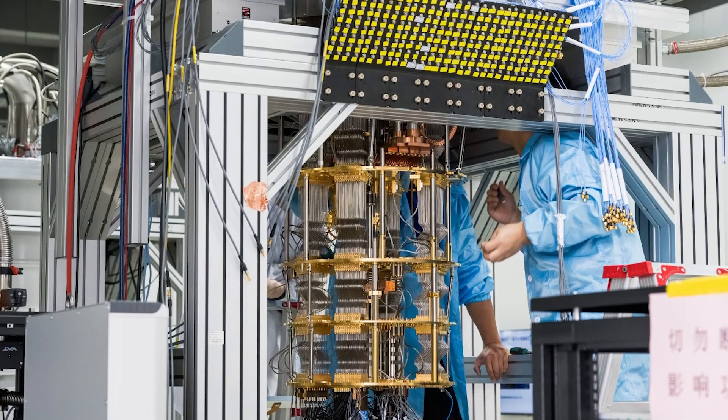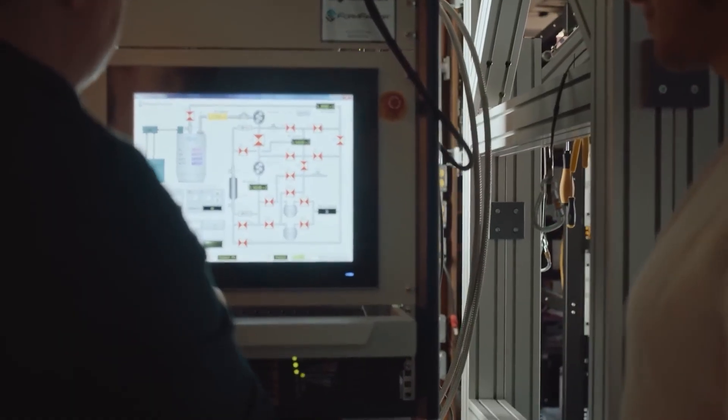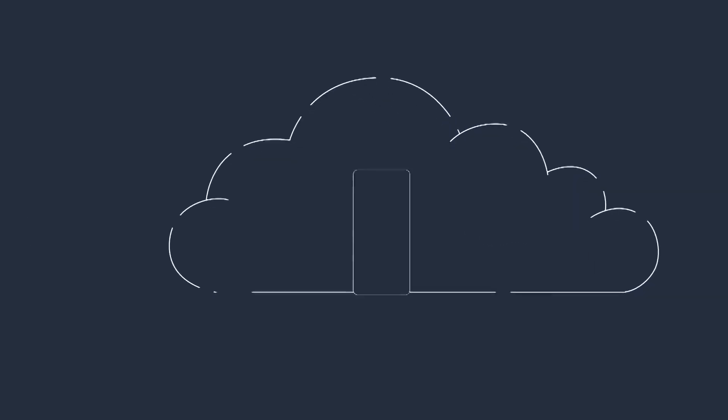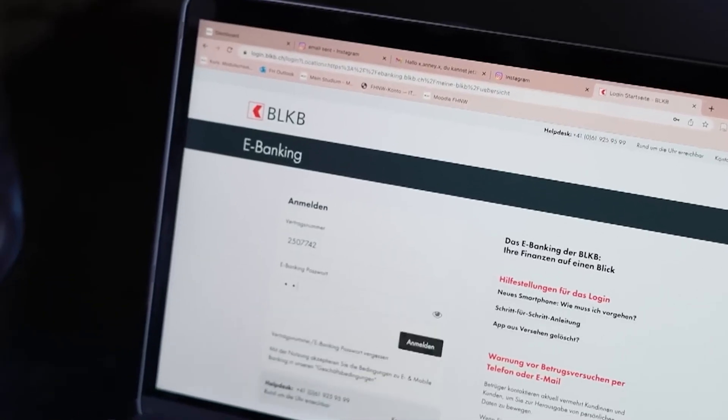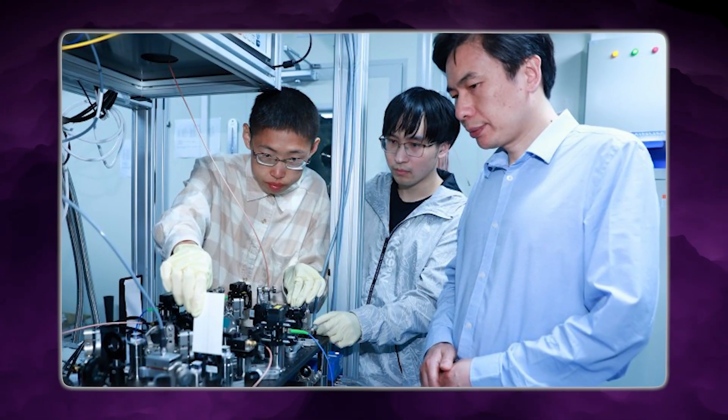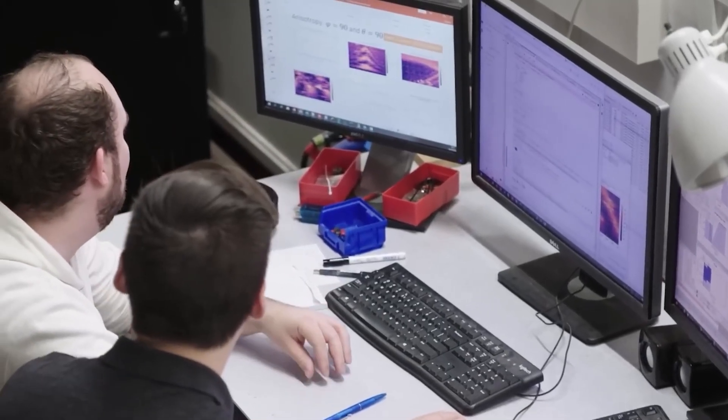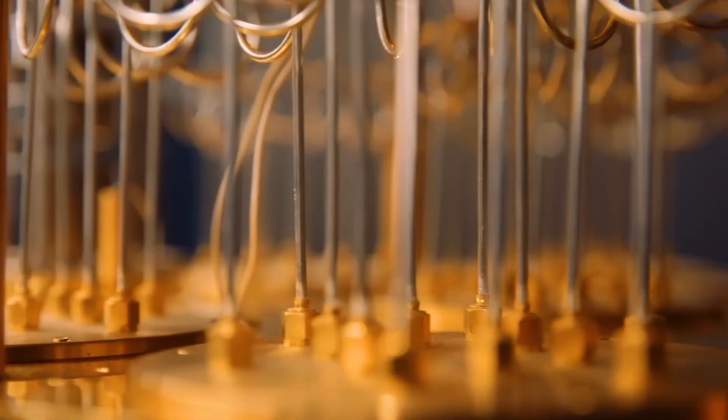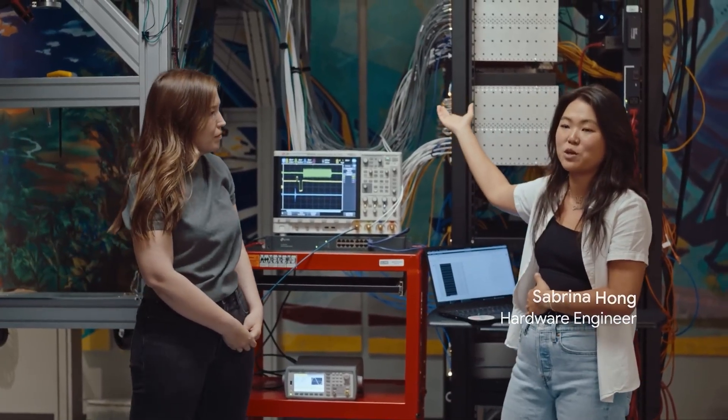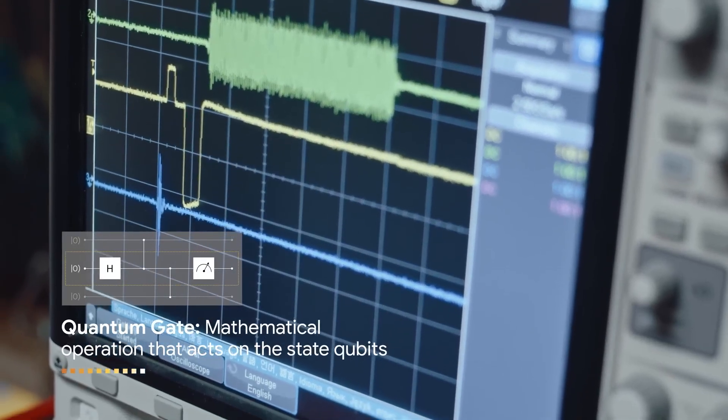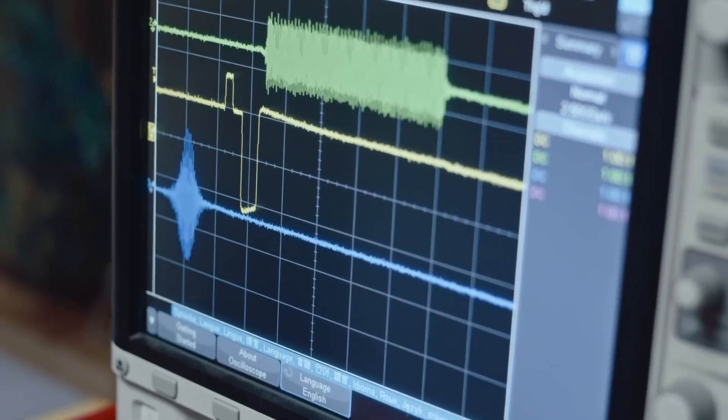Another reason Hanyuan-1 crossed the commercialization threshold is the ecosystem built around it. Quantum computing has long suffered from a usability problem. Many systems require deep knowledge of quantum physics to operate effectively. Cloud platforms help, but they also introduce data security concerns and limit integration with existing workflows, especially for industries handling sensitive information. Recognizing this, the teams behind Hanyuan-1 built a full cloud-based quantum computing platform alongside the hardware. This platform allows users to design quantum algorithms visually, optimize them for the underlying machine, and simulate large-scale quantum behavior without mastering atomic physics. More than 50 universities and companies have already joined the project to explore quantum applications.